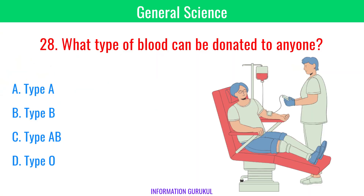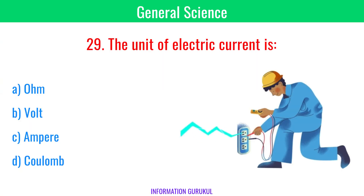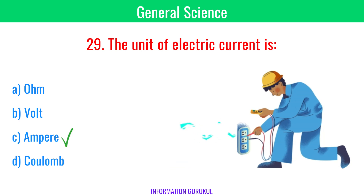What type of blood can be donated to anyone? Type O. The unit of electric current is Ampere.